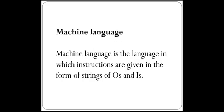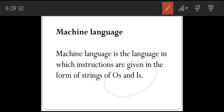Machine language is the language in which instructions are given in the form of zeros and ones. This is actually binary language, where instructions are given in the form of zeros and ones only. These machine level language programs are machine dependent, meaning if I create any code on my system and want to run it on your system, it is very difficult. A complete knowledge of computer architecture is required to write a program in machine language, so programmers find it a little difficult. For example, 1 0 1 0 0 0 0 1 0 1 is a machine language code and it is very difficult to understand.